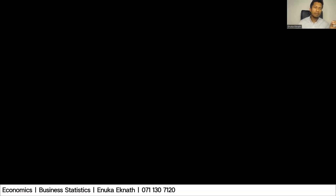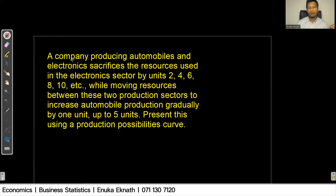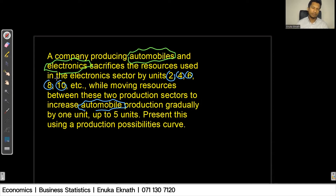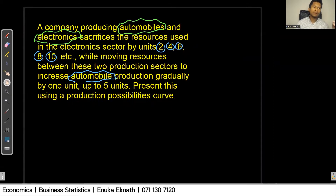I hope you all had enough time to read the question. According to the question, this given company produces only two goods: automobiles and electronics. They need to increase the production of automobiles gradually up to five units in total. When they increase automobile production by one unit, they sacrifice two units, then four, six, eight, and finally ten units from electronics.